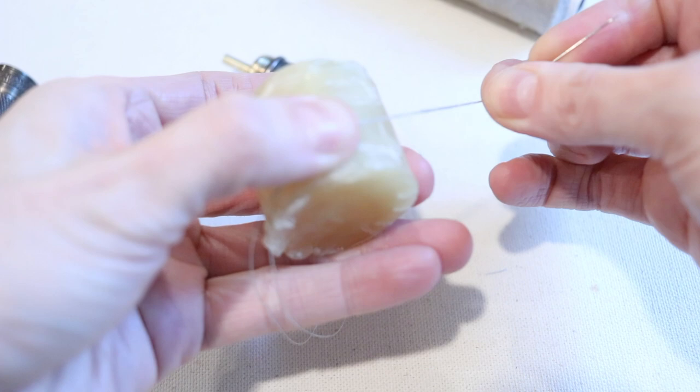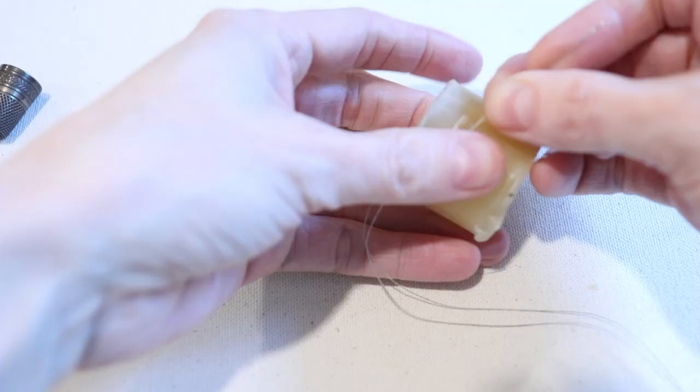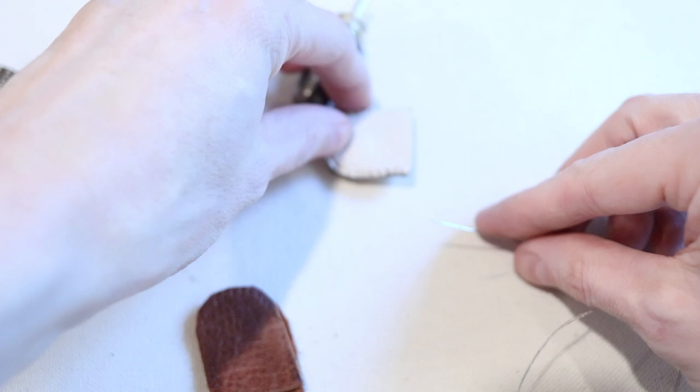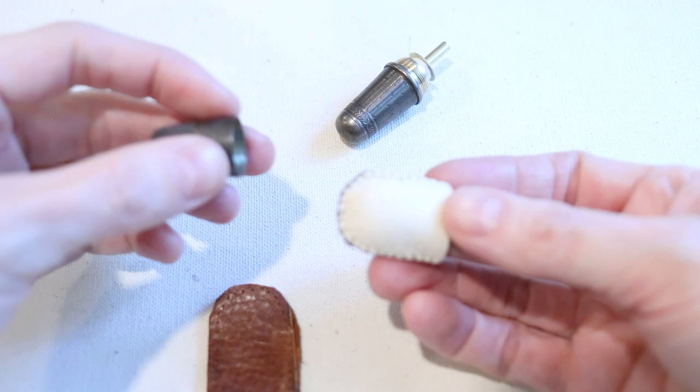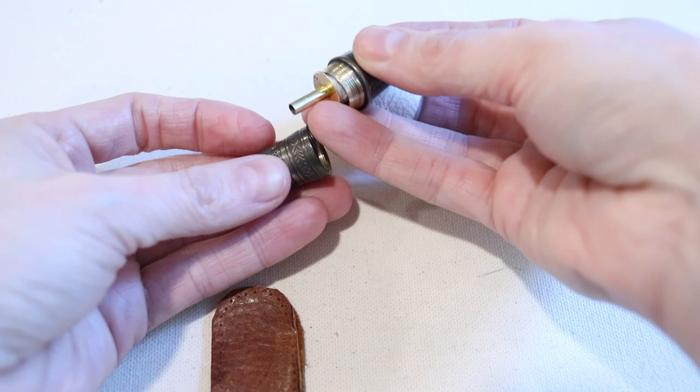So once you have your thread of choice secured to your needle with a double knot, we're going to be waxing the thread. This is just going to help strengthen that thread and really reinforce it since it is going to be going through leather and it is going to get quite a bit of use. So if beeswax is not something you typically keep in your sewing arsenal, fear not. You can use the thread as it is. It will be strong enough to hold your thimble together.